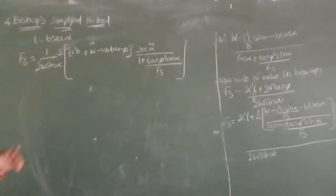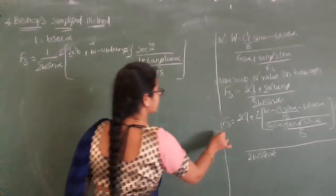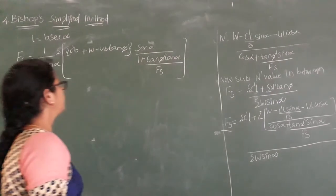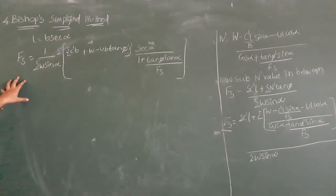So substitute L equal to B secant alpha in this equation. Upon simplifying you will get this final equation. This is the final equation of factor of safety which is given by Bishop's method.